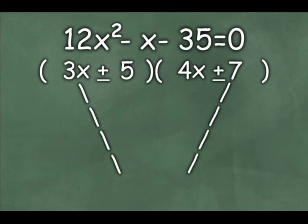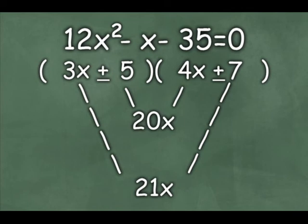But let's figure out why that's the correct solution. Let's check the outer product. We get 21x for the outer product, and we get 20x for the inner product. And we think, can we combine those somehow to get a negative x? And we can. Again, if the 20x is positive, and we subtract 21x, that will give us a negative x.